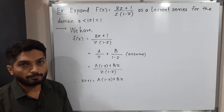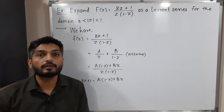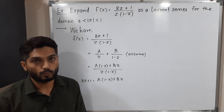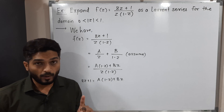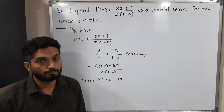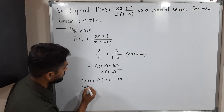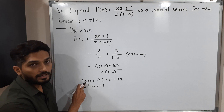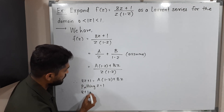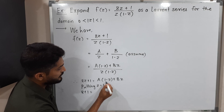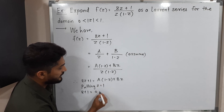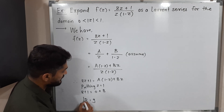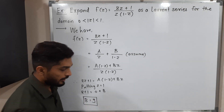So: 8z + 1 = A(1 - z) + Bz. To find B, put z = 1: the left side gives 8(1) + 1 = 9, the A-term vanishes since (1 - 1) = 0, and we get B = 9.